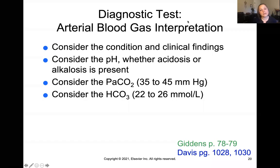When we're considering arterial blood gas interpretation, first you need to know what that test means. An arterial blood gas is a blood draw that's taken directly from an artery. Most of the time, if you go to the doctor and you're getting blood work done, you're taking venous blood — deoxygenated blood that's returning to the heart. But when you're taking an arterial blood gas, you're actually taking arterial blood, and so it's a deeper stick.